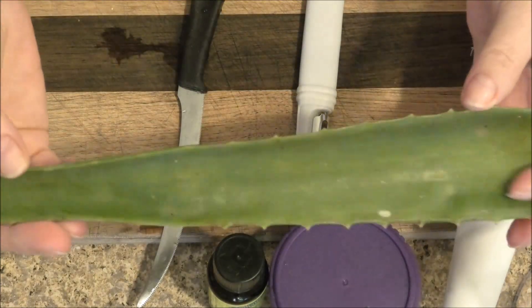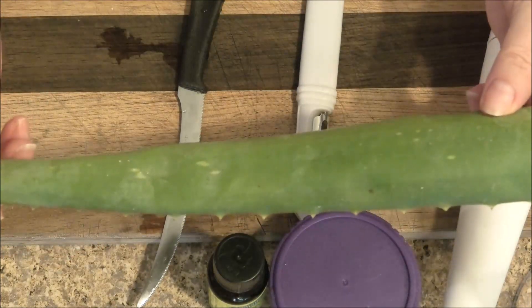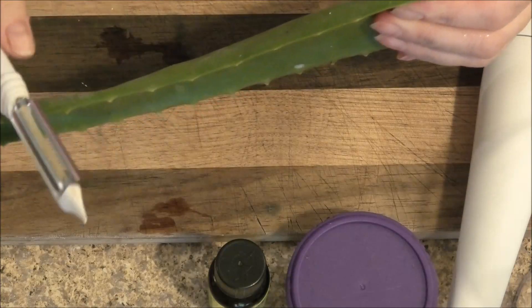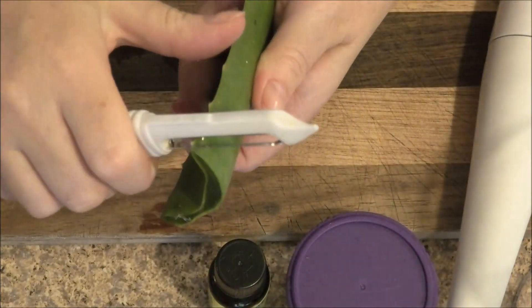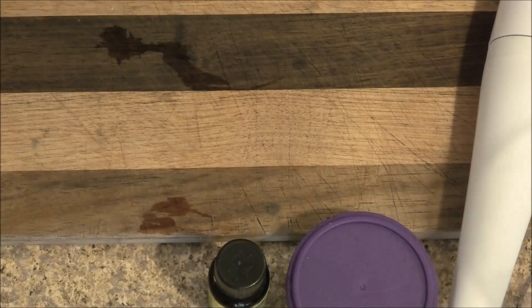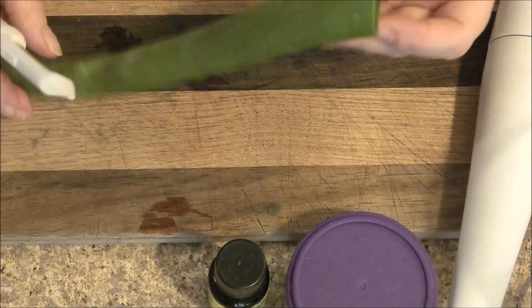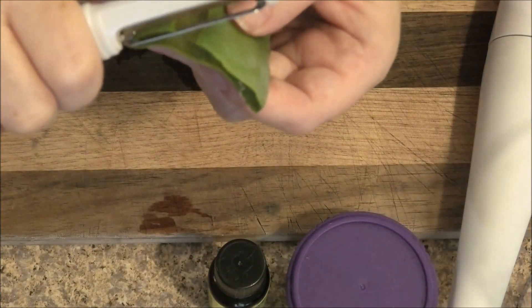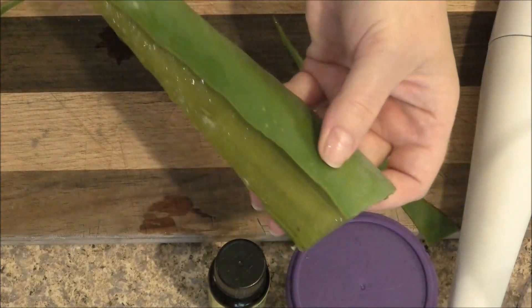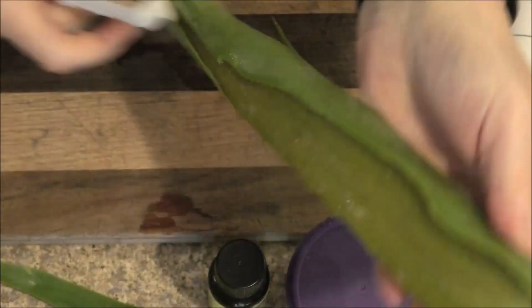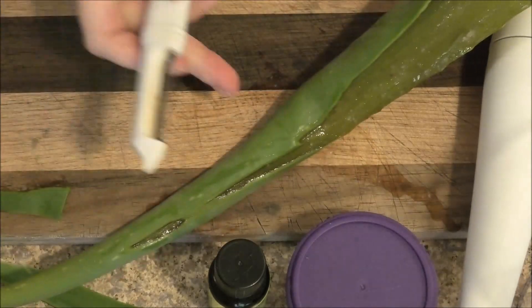We start with an aloe vera leaf, and firstly you want to peel off the sharp bits. Just get them out of the way. Then you want to peel the arch side. You want to take it down as far as you can on the leaf.